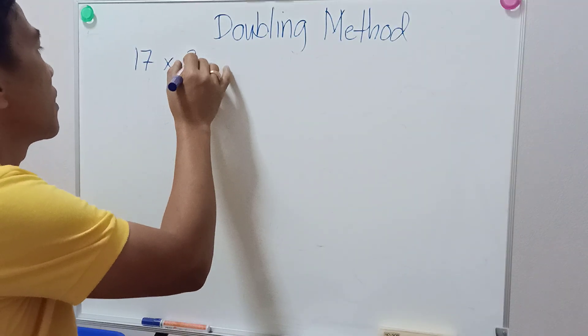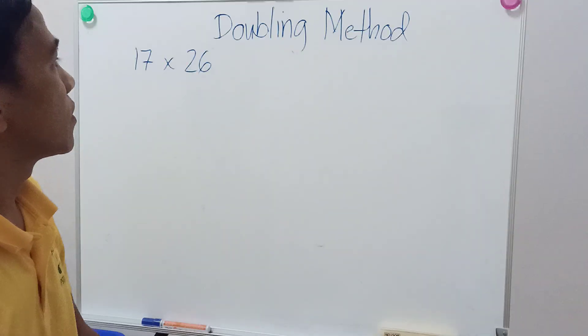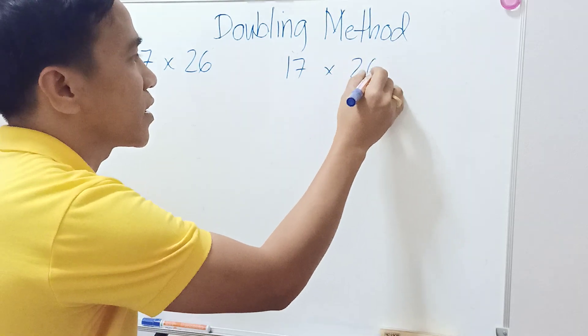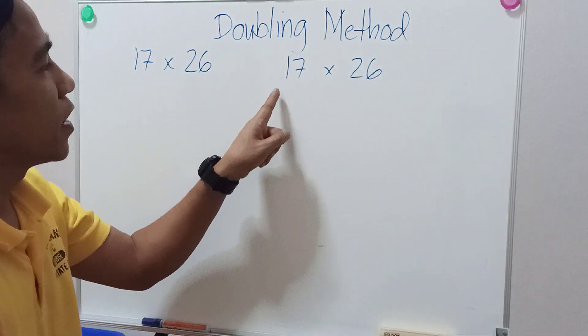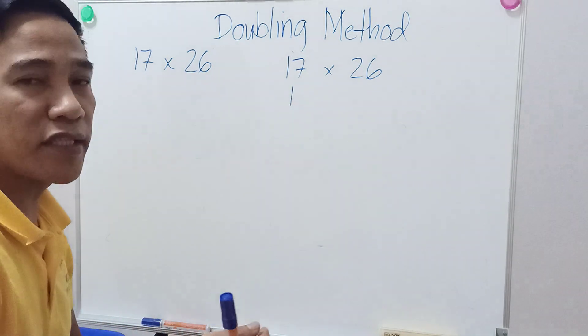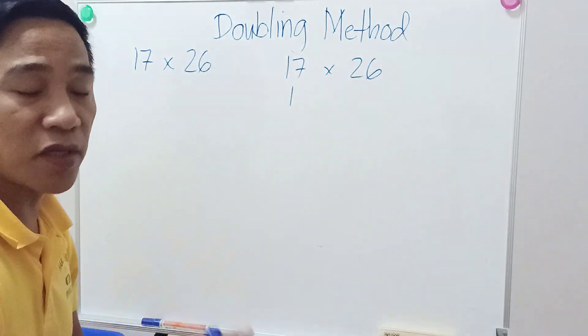For example, if you have 17 times 26, you start from 1 and then keep on doubling it until you reach a number that is less than 17.